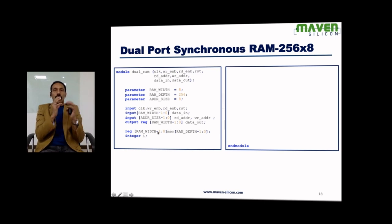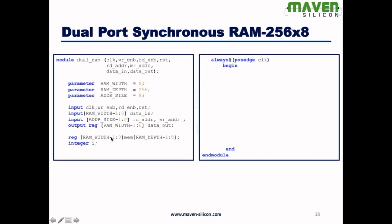So we have to define two things when it comes to RAM: the memory and the control signal, how the control logic is going to control. So here we are defining integer variable for for loop. Look at here. Always at clock edge, if reset is high I'm using a for loop starting from location 0.